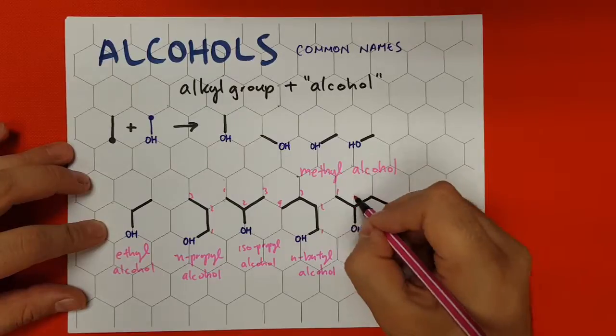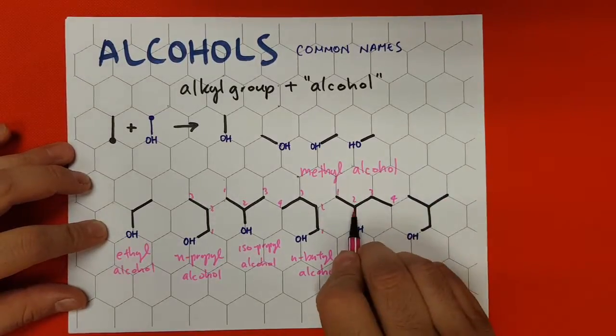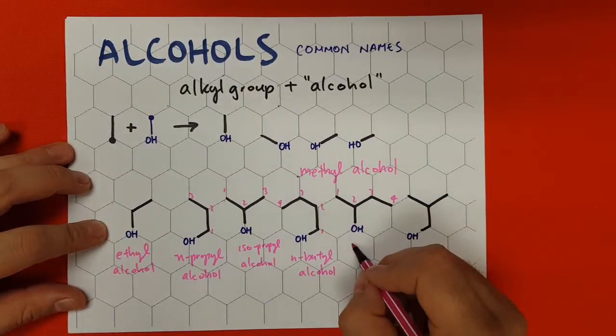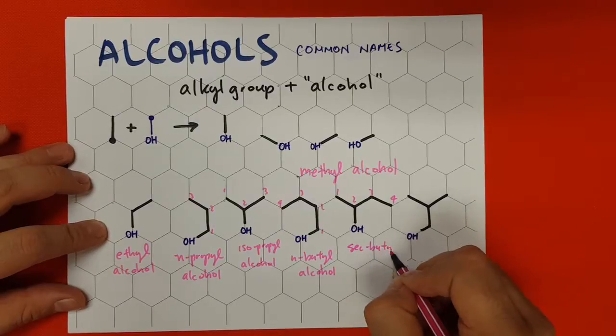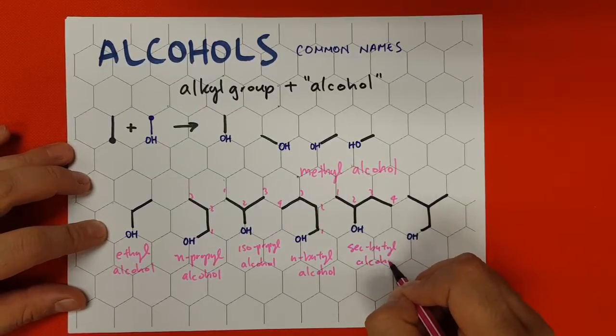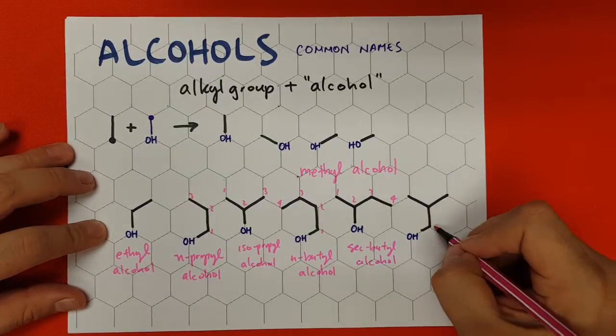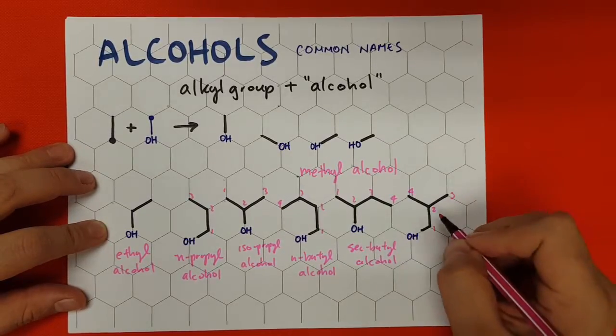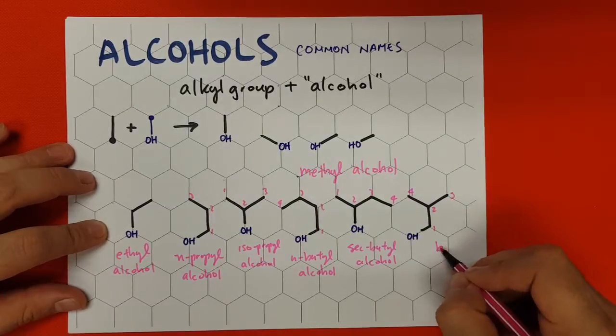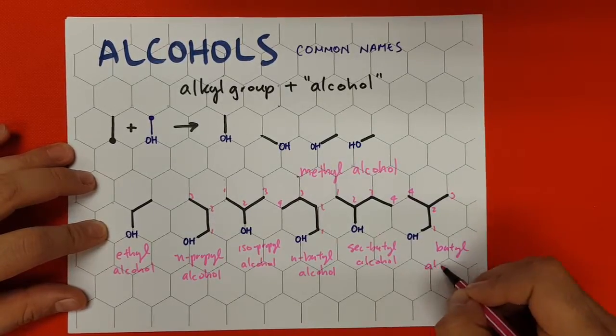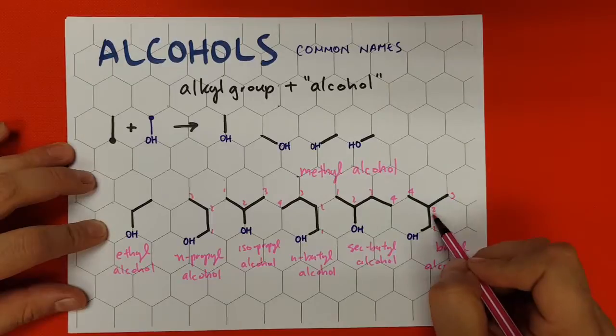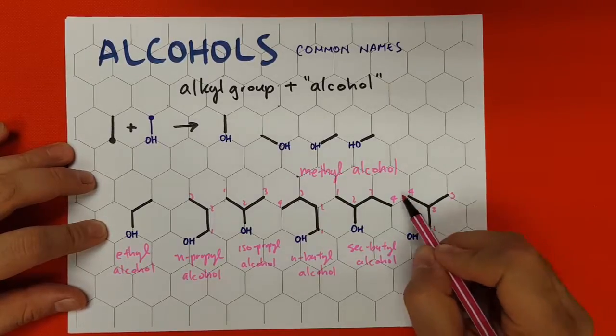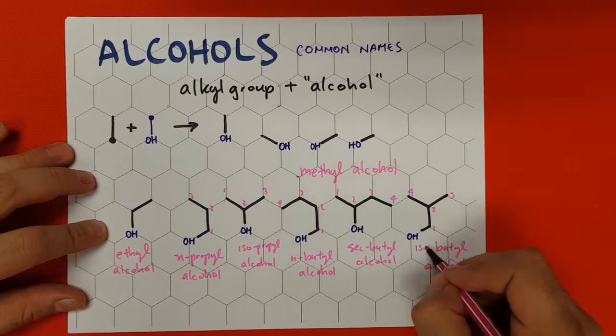And here we have one, two, three, four attached to the secondary carbon, so we have sec-butyl alcohol. And again one, two, three, we have another one, four, and so it's four carbons, so it's butyl alcohol. But since it ends in this antenna shape, one, two, three, four to the sides, it's isobutyl alcohol.